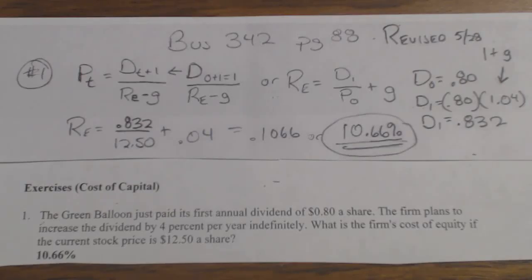This is Business 342, page 88, Homework Problems Number 1. The Green Balloon just paid its first dividend. It says just paid, so it's been paid, so that dividend is D0.